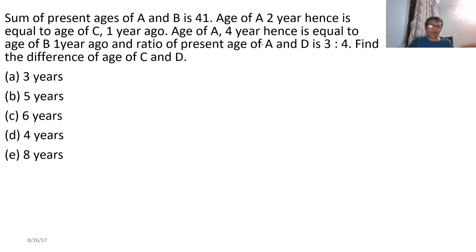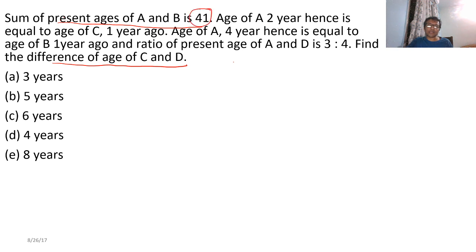The sum of present ages of A and B is 41 years, and we want the difference in ages of C and D. The age of A four years hence is equal to the age of B one year ago. We have to start with 41 since that's the only age given. This tells us that B is five years older than A.